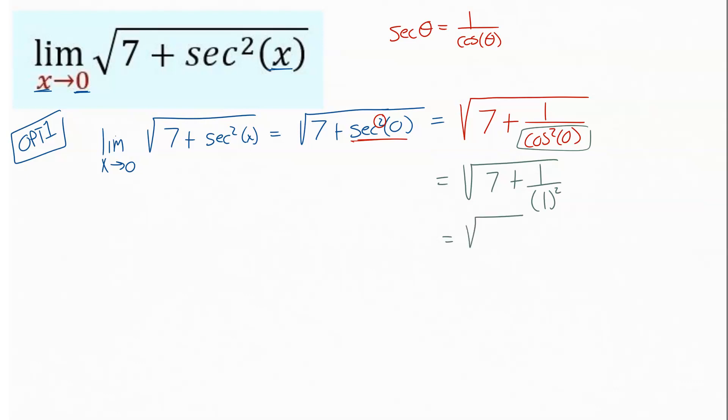Then cleaning this thing up, we end up with the square root of seven. One divided by one is one, and we end up with the square root of seven plus one is the square root of eight.